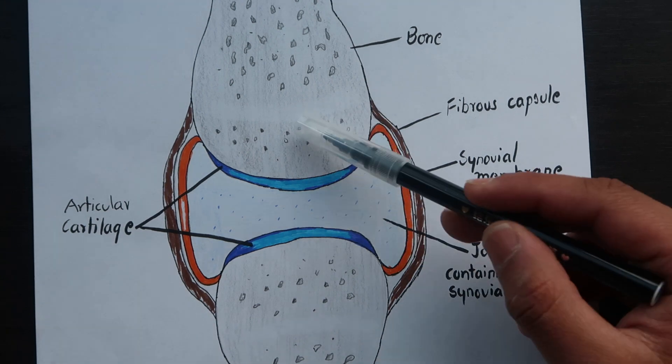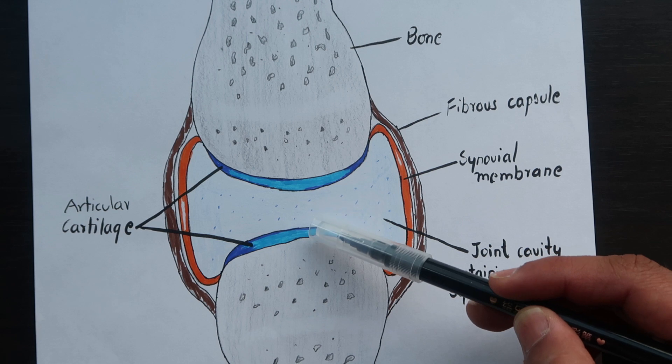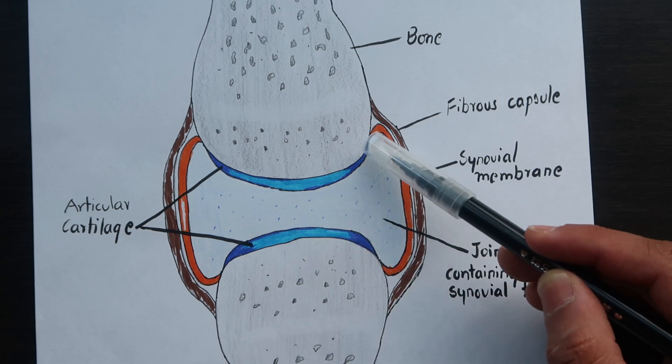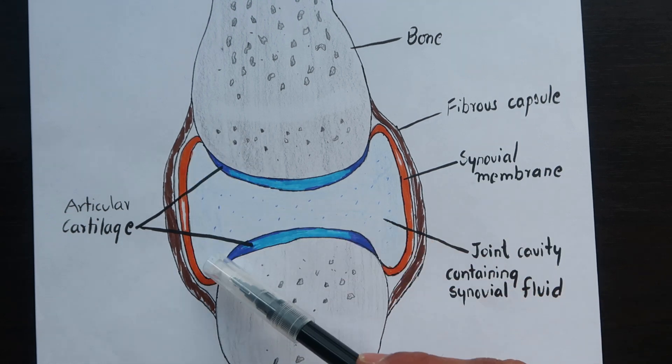We have two bones articulating with each other. The articulating cartilages line these two bones, shown here in blue. The synovial membrane surrounds the joint, and the articulating cartilage along with synovial membrane forms the inner lining of the joint.